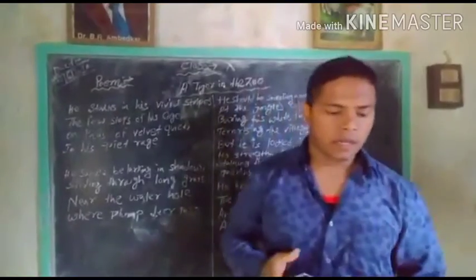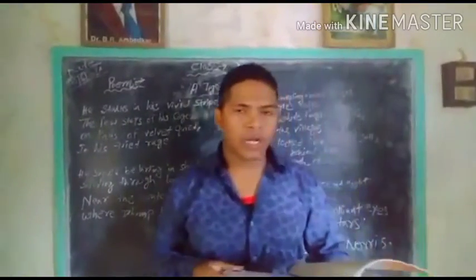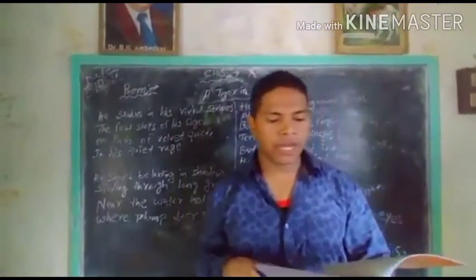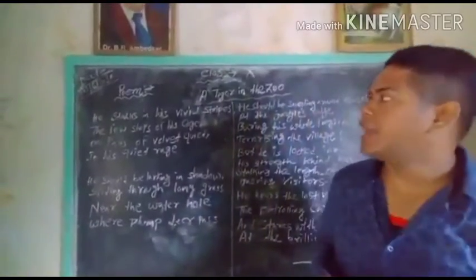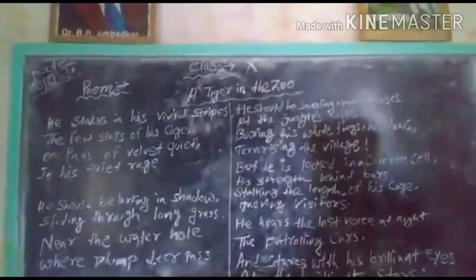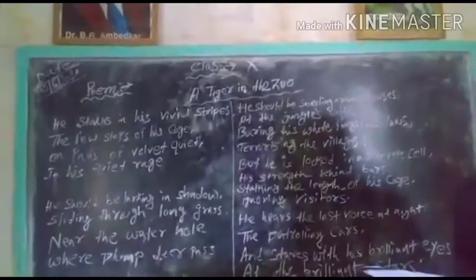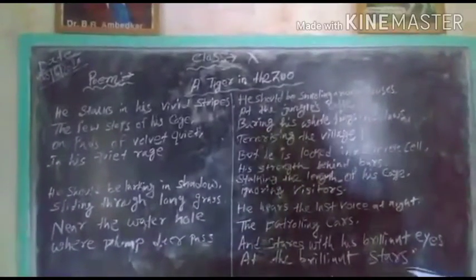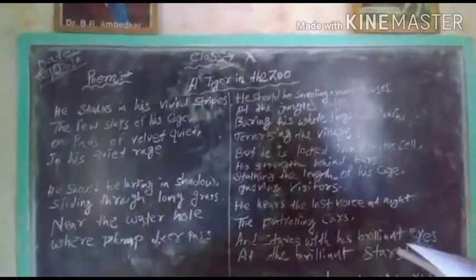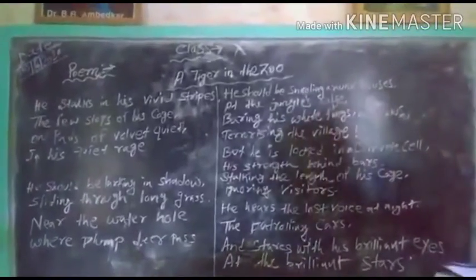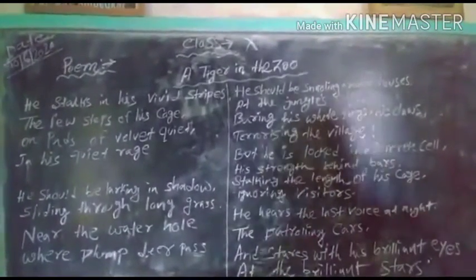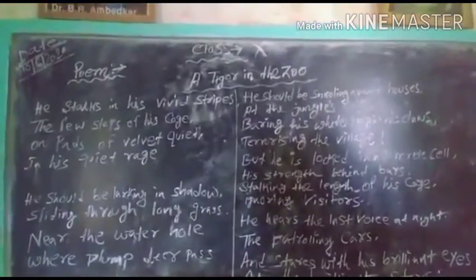All the students of Class 10, today I am going to discuss one poetry from your textbook. The poetry's name, as you can see here in the book, is 'A Tiger in the Zoo.' The poet of this poem is Leslie Norris. The poet begins like this — listen carefully everyone and look at your board.